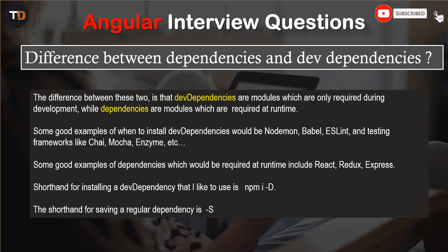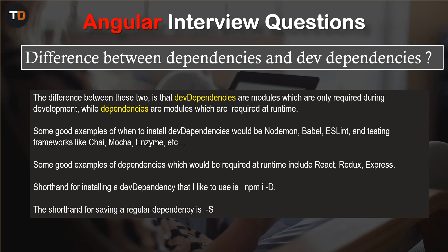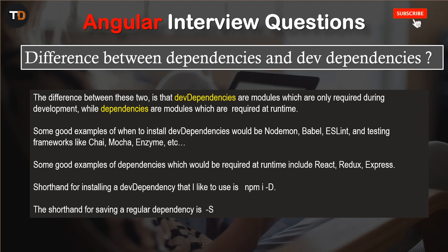The shorthand for installing dev dependencies is 'npm i -D'. If you want to install a regular dependency, just replace '-D' with '-S'. This is the main difference between dependencies and dev dependencies.